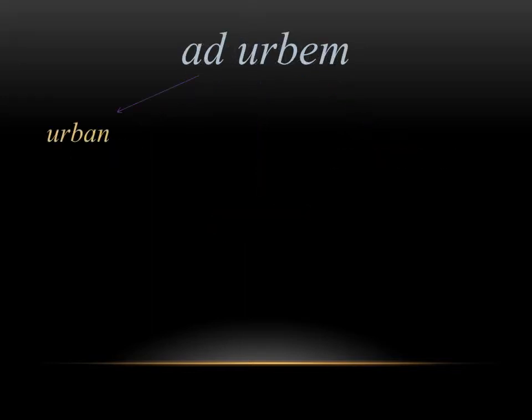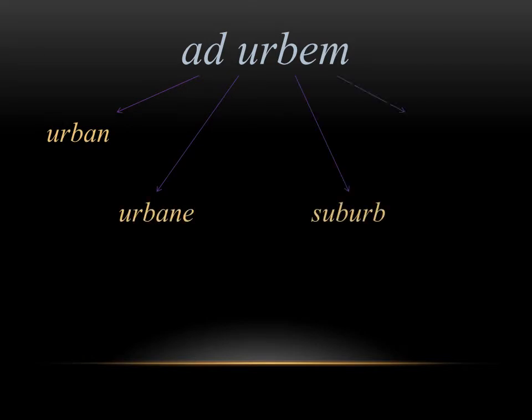From ad urbem, specifically the word urbem which means city, we get urban, urbane, suburb, and suburban. All four of these words have to do with a city, and they're coming from that root urbem — or urbs, which is the nominative form — meaning city in Latin.